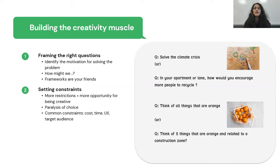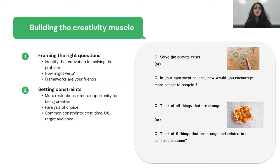As an example, let's say I asked you to solve the climate crisis — you probably wouldn't know where to begin. But instead, let's say I asked you to solve the recycling problem in your neighborhood. You at least have a starting point and you're able to think about more possible solutions. More restrictions equals more opportunity to be creative.